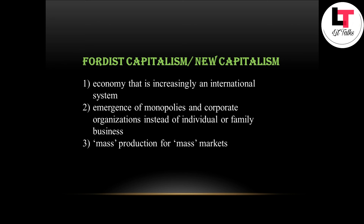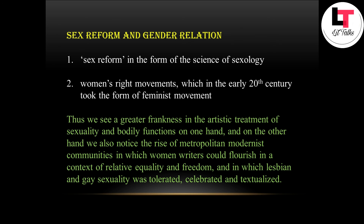The fourth point is sex reform and gender relations. The period of artistic modernism coincides with the international movements of sex reform in the form of the science of sexology. Moreover, the women's rights movement, which in the early 20th century took the form of the feminist movement, was also there to reconstitute gender relations. Thus, we see a greater frankness in the artistic treatment of sexuality and bodily functions on one hand, and on the other hand, the rise of metropolitan modernist communities in which women writers could flourish in a context of relative equality and freedom, and in which lesbian and gay sexuality was tolerated, celebrated, and textualized.